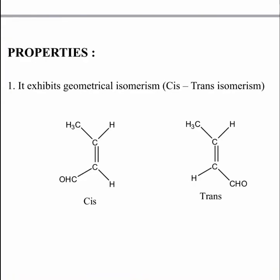Properties: First, it exhibits geometrical isomerism, meaning it exhibits cis-trans isomerism. Cis means functional groups are on the same side, while trans means functional groups are on the opposite side. So croton aldehyde exhibits cis and trans isomerism.